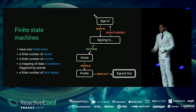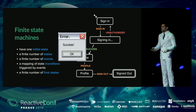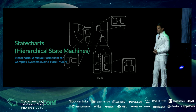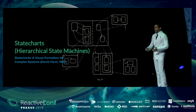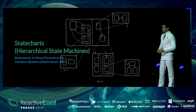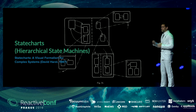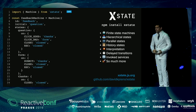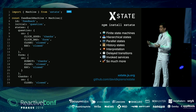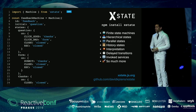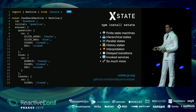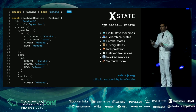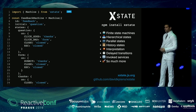Why do we use finite state machines? It's to prevent impossible states. State charts are an extension of finite state machines with more features. Using these concepts helps prevent impossible states and helps you make sense of your application. I created XState, which is a way of coding these state charts into your application. If you don't need all those features, there's also XState FSM just for the finite state machine. Go check out XState — it's a great way to represent your states.